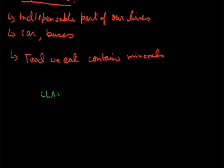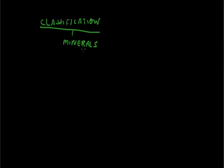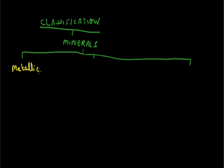Now let us classify minerals. We can classify minerals into three types. The first one is metallic minerals. Metallic minerals are minerals which are hard, ductile, and shine. Examples are iron, copper, etc. Cars and trains are all made up of metallic minerals. They are hard and very useful to us.